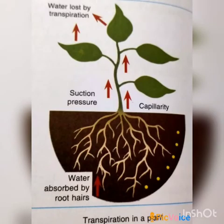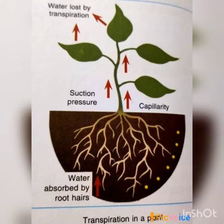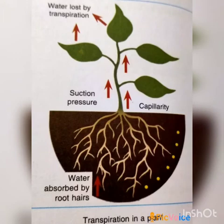Now, transpiration in plants. Transpiration is the process by which excess water evaporates in the form of water vapor from the plant surface, especially from the stomata on the leaves. The plant absorbs water and minerals from the soil, and while most of the minerals are utilized, the water is not fully used up. This excess unused water needs to be evaporated out, and it is removed from the plant through the process of transpiration.